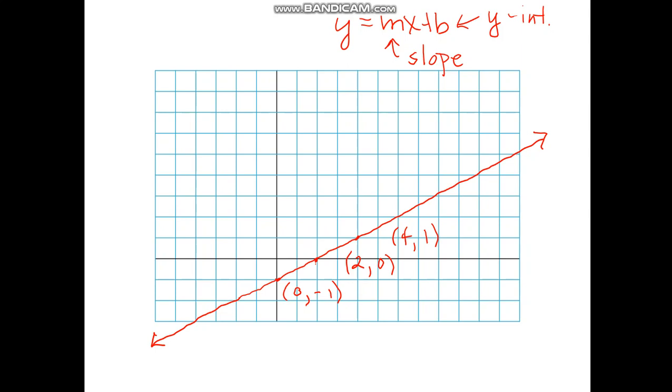Well, slope, we talk about being the rise over the run. So how far it goes up and down, how far it rises, and then how far it goes across. So in this case, we're going to go up one and over two, up one over two, up one over two. So we have a rise of one and a run of two, and that's the slope.